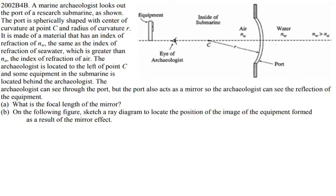In this question, a marine archaeologist looks out the port of a research submarine. The port is spherically shaped with center of curvature at point C and radius of curvature R. It is made of a material with an index of refraction N_W, the same as seawater, which is greater than N_A, the index of refraction of air. The archaeologist is located to the left of point C, and some equipment is located behind the archaeologist. The archaeologist can see through the port, but the port also acts as a mirror, so the archaeologist can see the reflection of the equipment behind him.